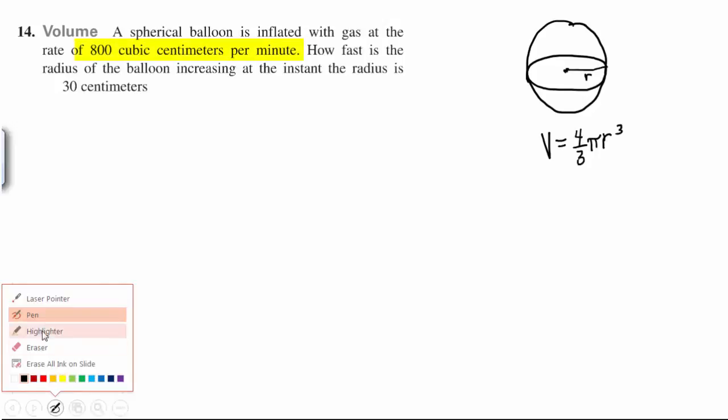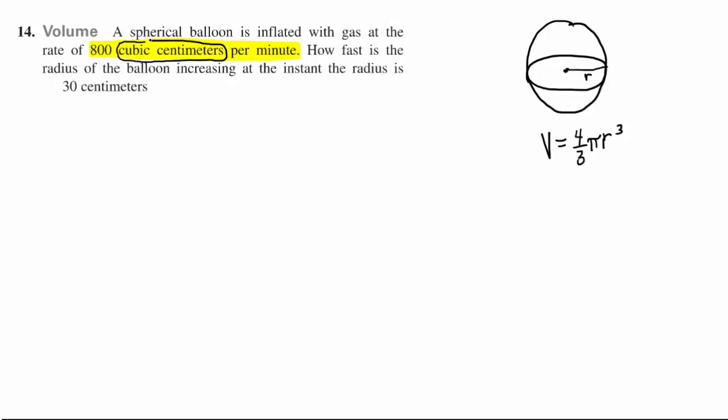What is the 800 cubic centimeters per minute? What is that referring to? The rate of what? Isn't that referring to the rate at which the volume is increasing? One hint here is that we're talking about cubic centimeters which is a measure of volume.